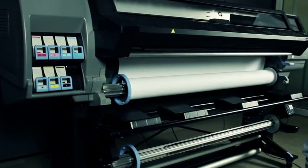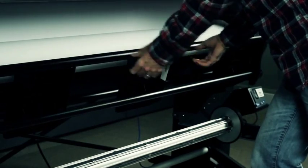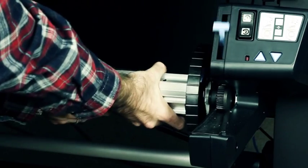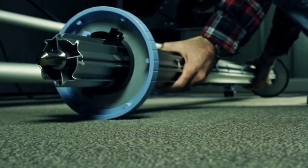For easier access to the take-up reel, lift the loading table into its upright position. Unlock the take-up reel by pushing its lever to the uppermost position. Remove the take-up spindle and leave it on the floor.